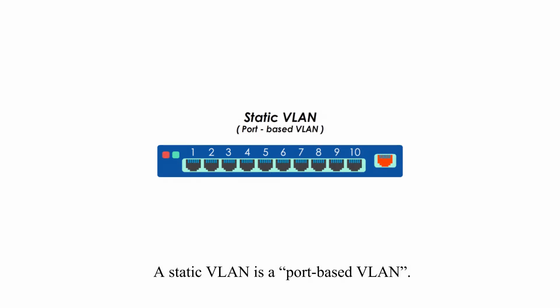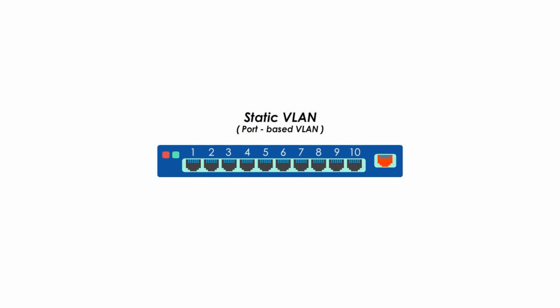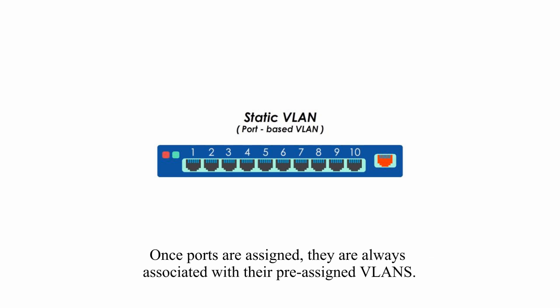A static VLAN is a port-based VLAN. This type of VLAN requires manual assignment of individual ports on a switch to a virtual network. Once ports are assigned, they are always associated with their pre-assigned VLANs.